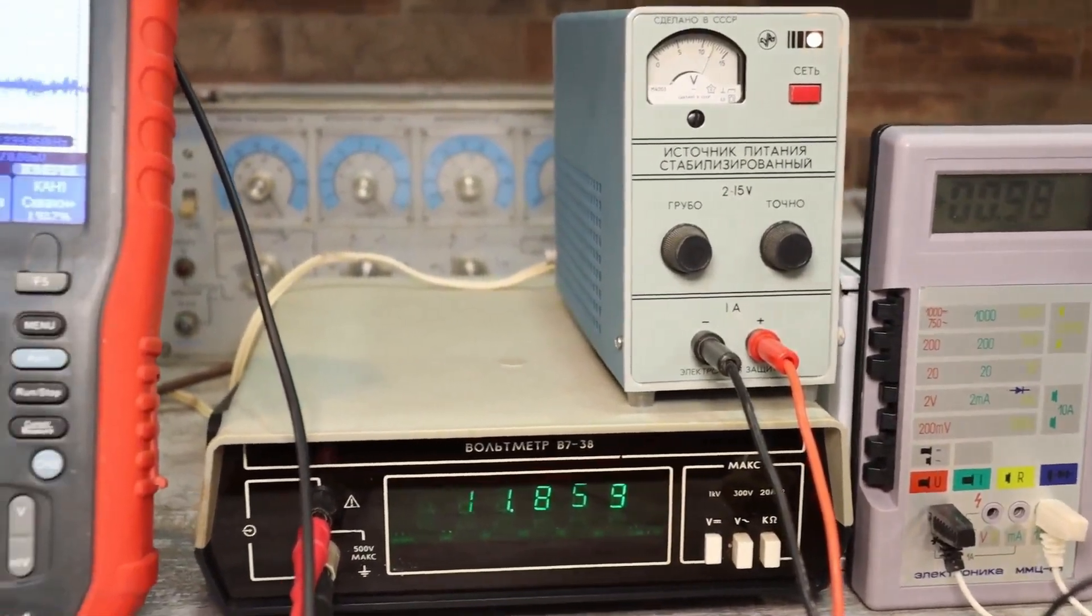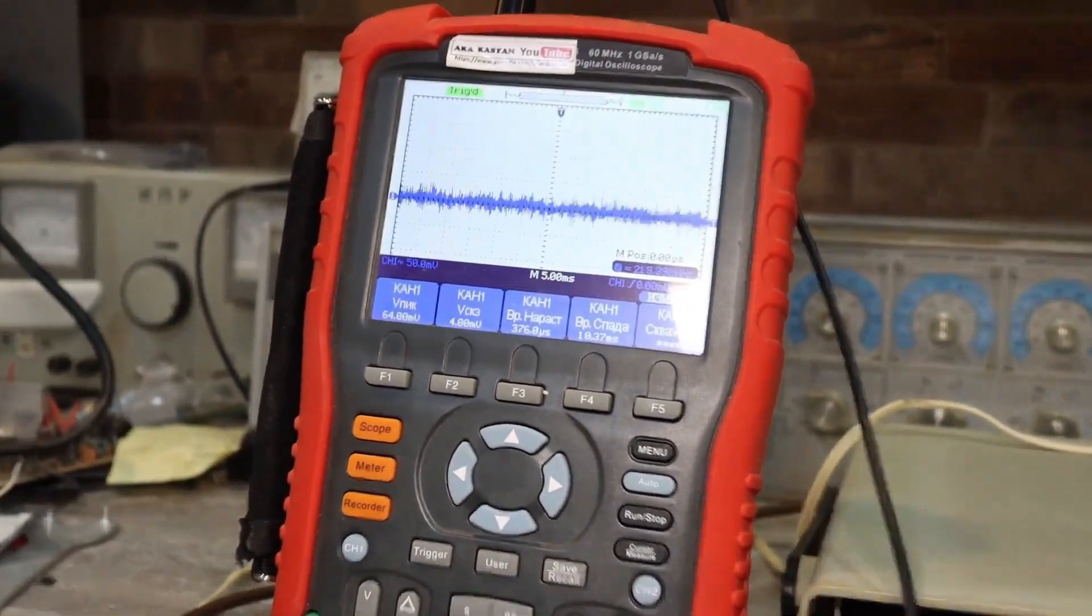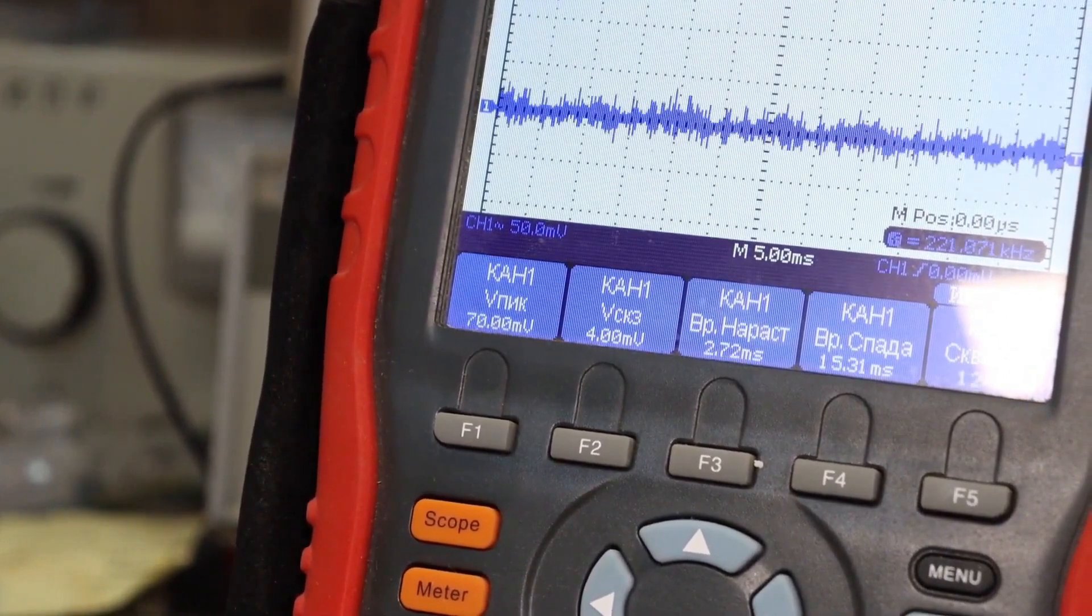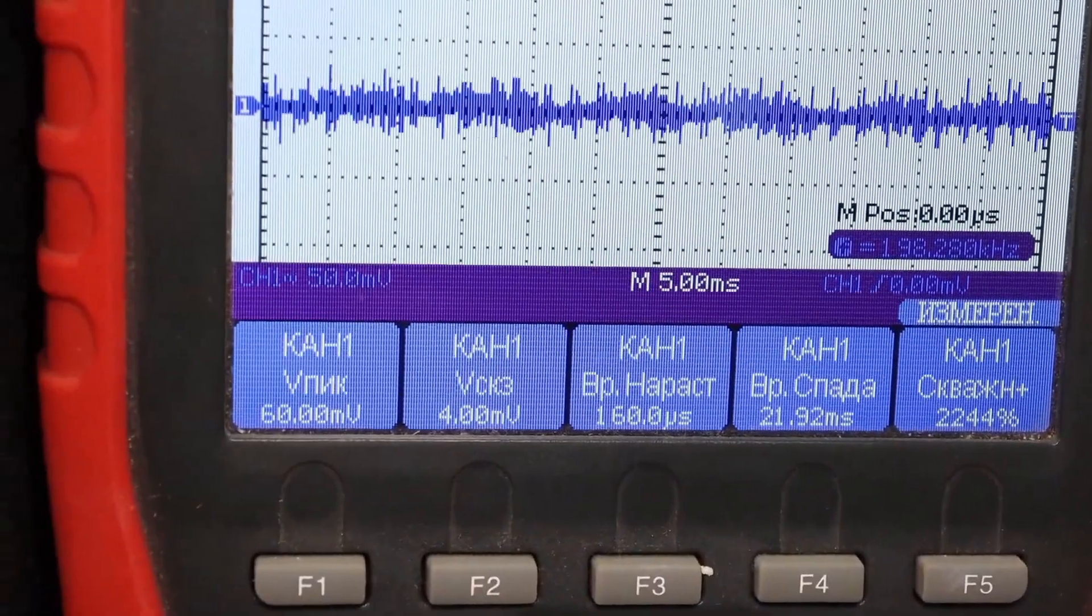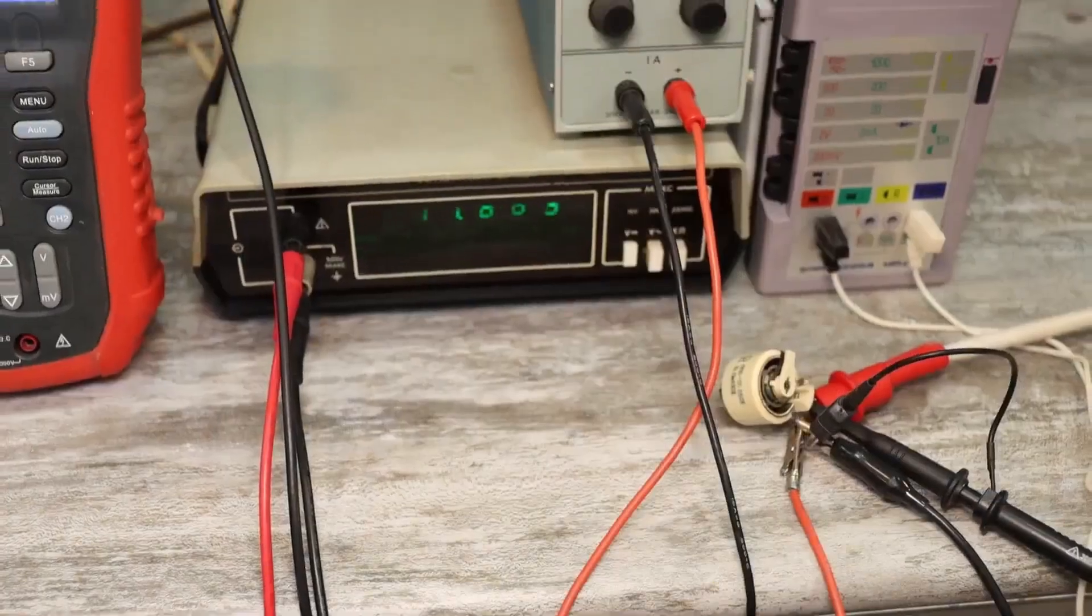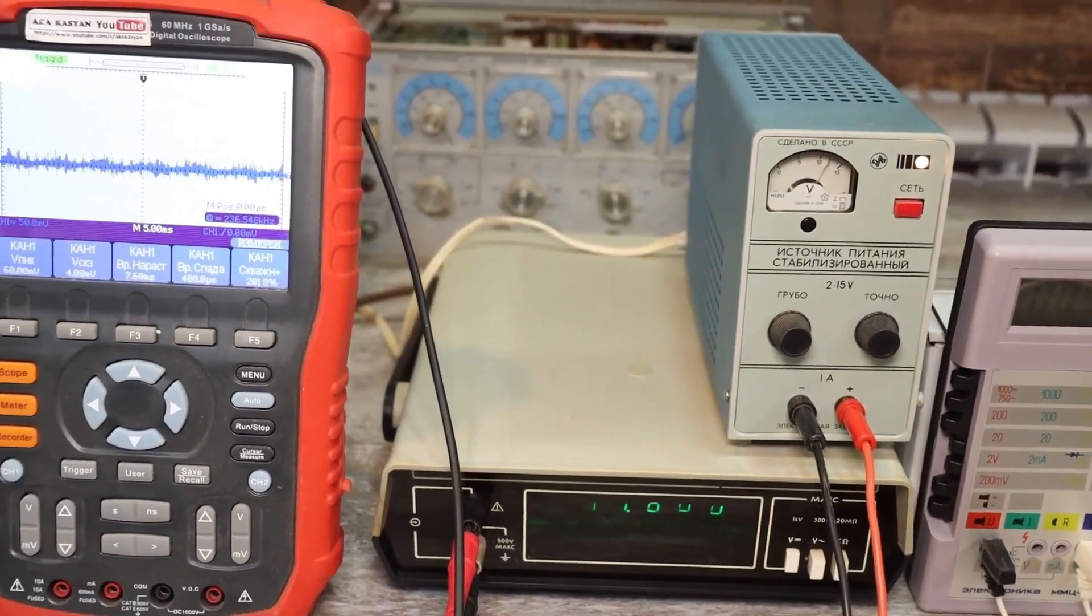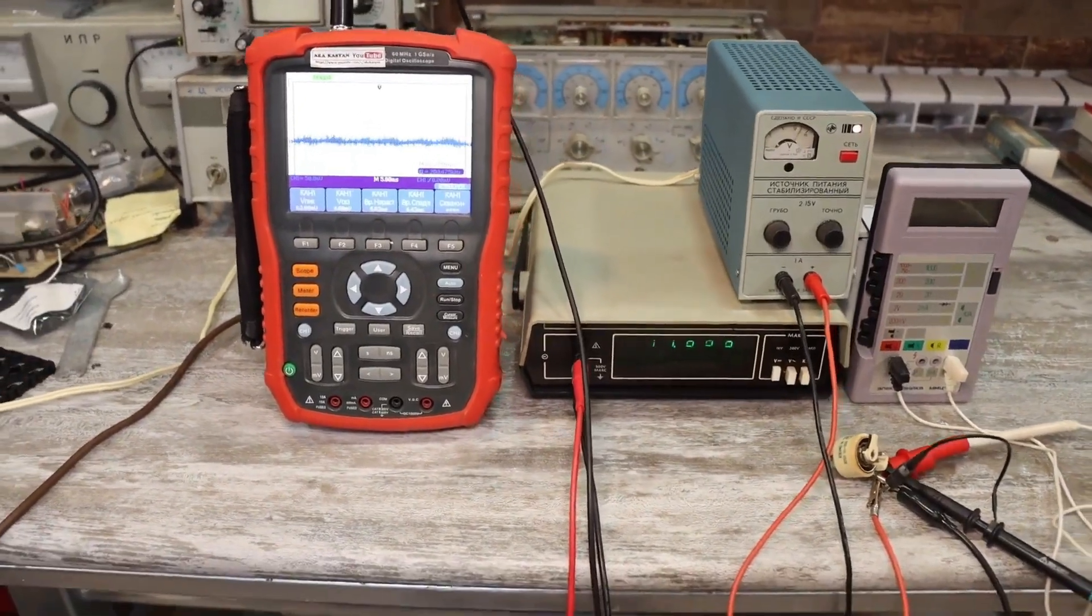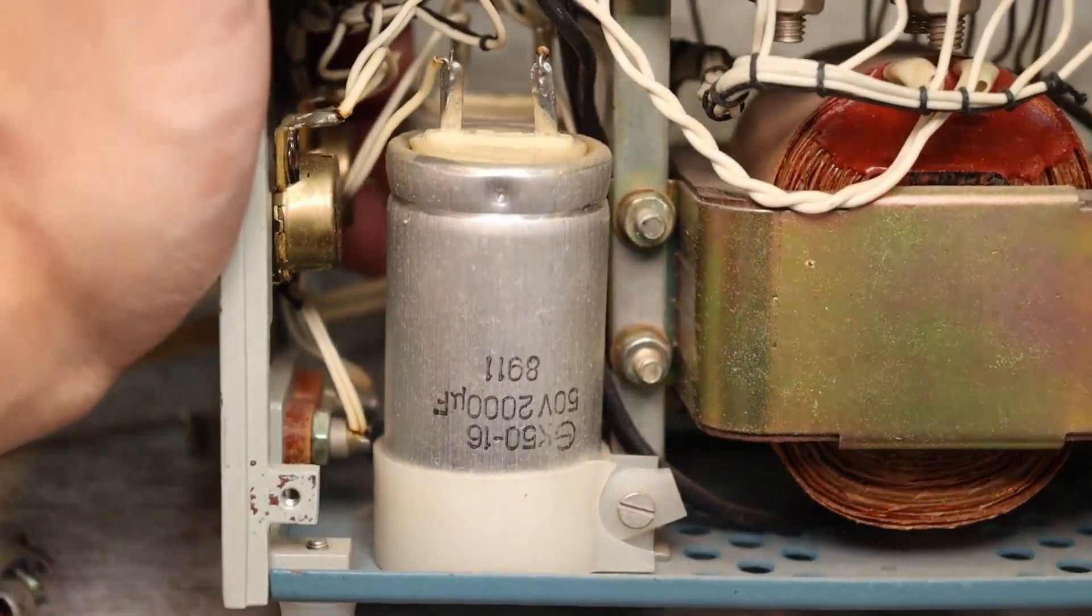Under the same measurement conditions, 12 volts at the output with a load current of 1 ampere, the voltage ripple did not exceed 60 to 65 millivolts. And this is the peak value, while the root mean square is about 4 to 5 millivolts. The oscilloscope's bandwidth is 60 MHz. Filters are turned off. The ripple is a bit more than it should be, but this can be attributed to the electrolytics. The unit is over 30 years old, so it's forgivable.